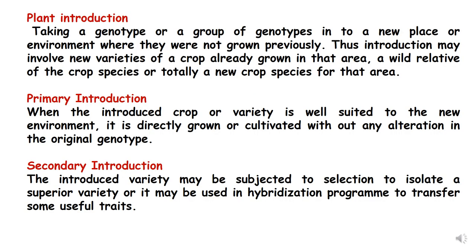Plant introduction can be primary or secondary. Primary introduction is when the introduced crop or variety is well suited to the new environment and is directly grown or cultivated without any alteration in the original genotype. Secondary introduction is when the introduced variety is not acclimatized in the new environment, so it is altered — either subjected to selection to isolate a superior variety, or used in a hybridization program to transfer useful traits.